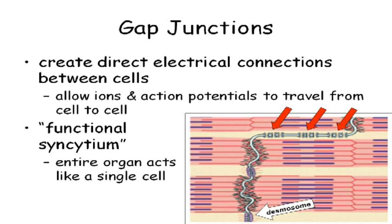The membrane fusion doesn't happen in cardiac muscle. But because of the gap junctions, essentially physiologically it doesn't matter — even though anatomically the cells are separate, physiologically they behave as one.